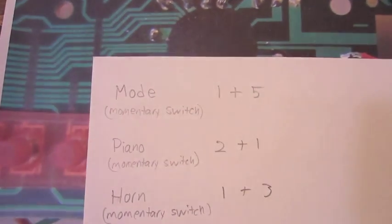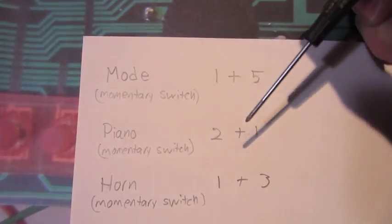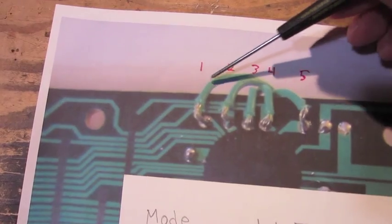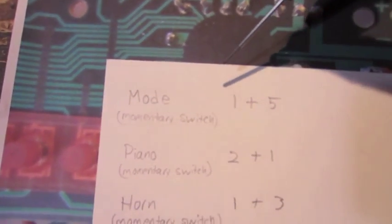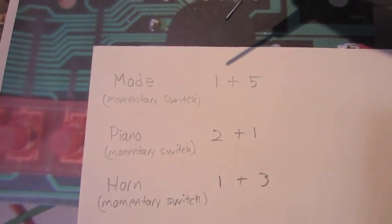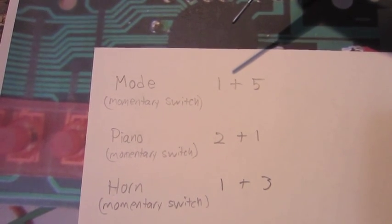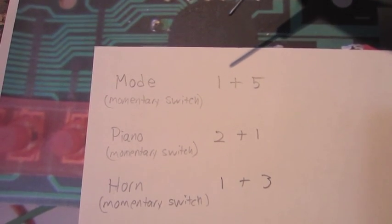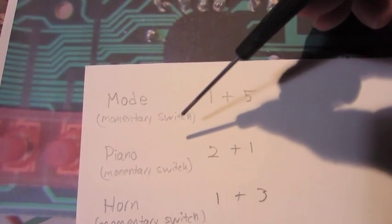And then the next one is the horn. This is the same thing, momentary switch, pins 1 and 3. Actually, the horn is a little different. There's two sounds. Press it once, you get the first sound. Press it again, you get the second sound. Press it again and go back to the first sound. So it just toggles between those two sounds. And then if you press piano, it'll go back to piano.